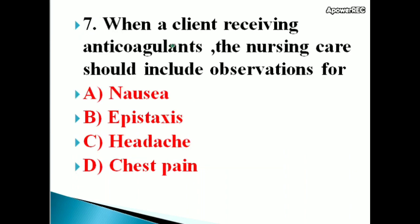Next question: When a client is receiving anticoagulants, nursing care should include observations for — options: nausea, epistaxis, headache, chest pain. The correct answer is epistaxis. When a client is receiving anticoagulants, nursing care should include observations for epistaxis, which means bleeding from the nose.